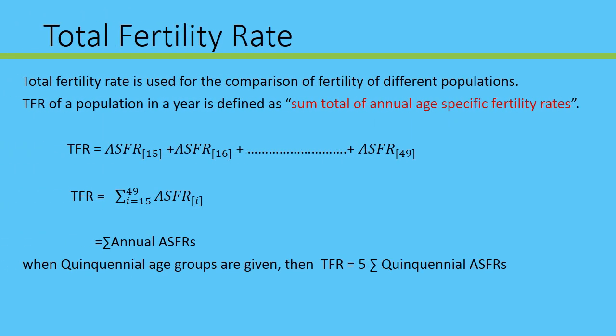Dear students, in this session, let us study regarding total fertility rate. Already you know that there are four different measures of fertility. The first one is CBR, crude birth rate. The second one is general fertility rate. Another one is age-specific fertility rate. And the last one is total fertility rate.